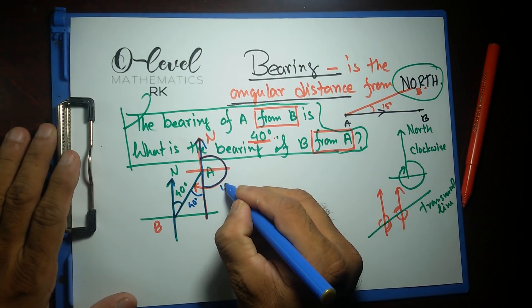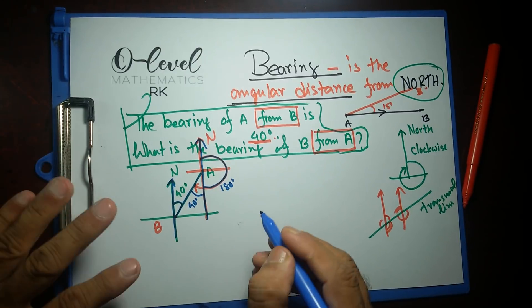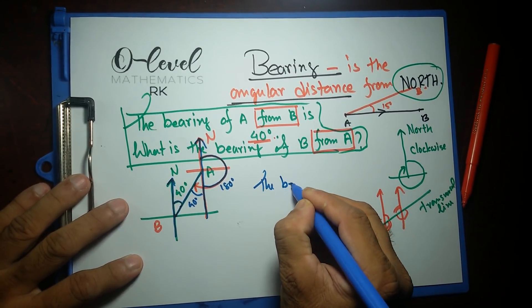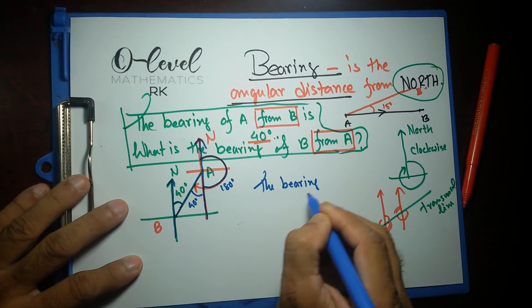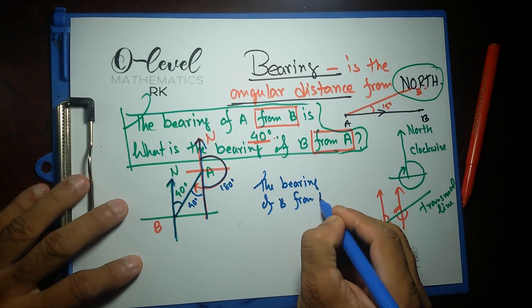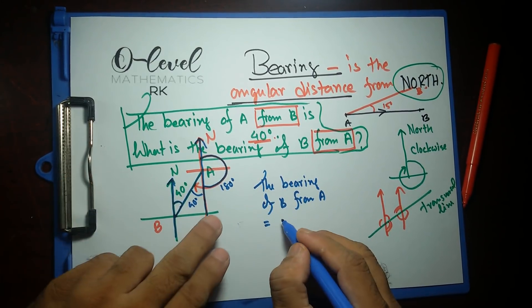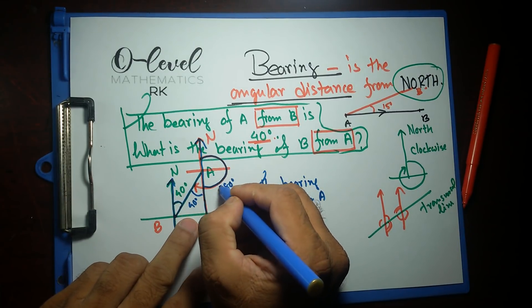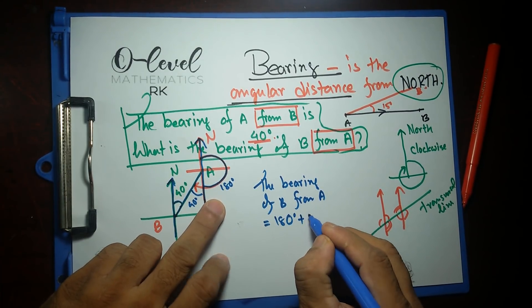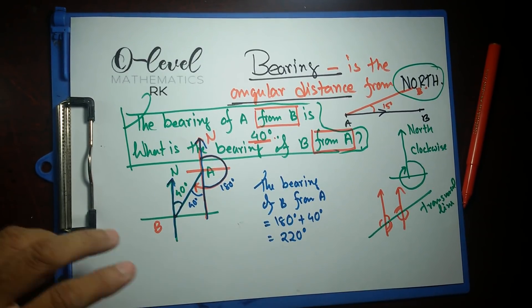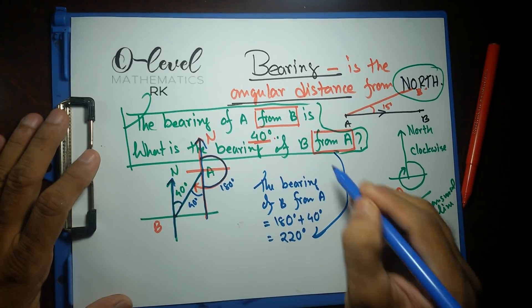And this angle over here, we already know, that's gonna be 180 degrees. It's a straight angle. So the required bearing, the bearing of B from A, equals to 180 degrees, the whole angle from here to here, 180 degrees plus 40 degrees. That's gonna be 220 degrees. That's our answer for this particular question.